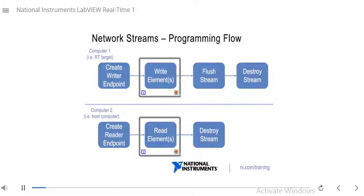After that, we move into the main portion of the program where the RT target is writing elements to the network stream, and the host computer is reading elements from the network stream. At some point, we stop writing elements and flush the stream — sending all remaining written elements to the reader. Then we finish reading all those elements on the host computer and destroy the stream on both ends.